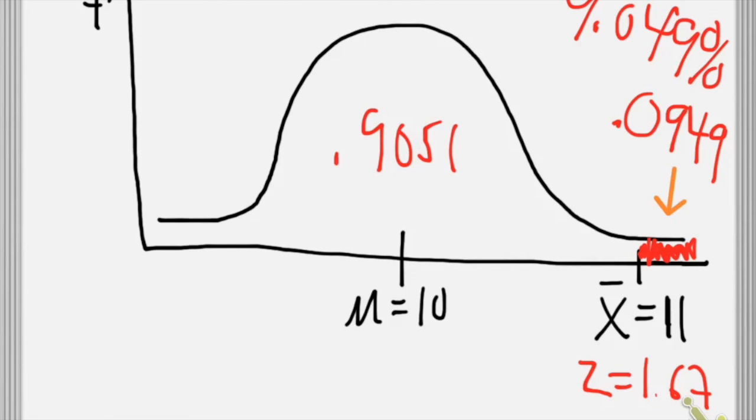But it would be fairly rare, about one in 10 times you would expect to get a sample mean this much bigger than the population mean by chance. So that is it, and I hope that that was helpful. Thank you.